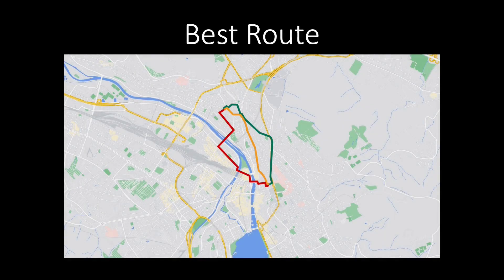Routing is a concrete example of an optimization problem. On your way to school, you probably want to minimize your commuting time. This optimization problem considers all feasible routes and selects the fastest one. The quality measure is the commuting time, which we want to minimize.